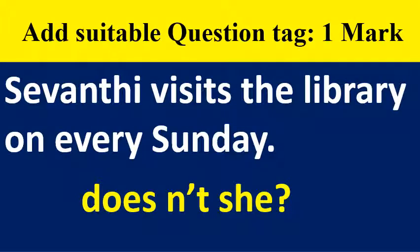Add a suitable question tag: 'She visits the library on every Sunday.' Because 'visits' is present tense and 'She' is singular feminine, the question tag is 'doesn't she?' The question is in positive form, so you need to make it negative. 'Doesn't she?' is the correct question tag.